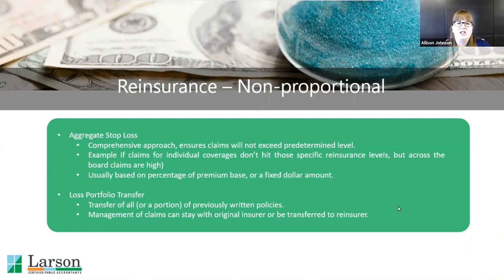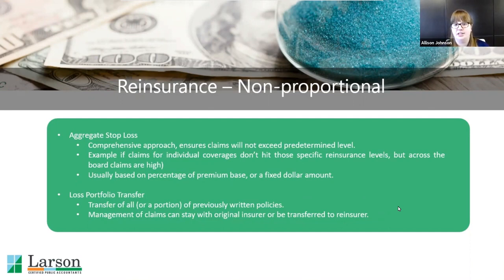A loss portfolio transfer is more of a one-time event rather than an ongoing reinsurance agreement. Say an insurance company decides they no longer want to insure auto in a specific state — they could do a loss portfolio transfer, taking that whole block of business and associated policies and transferring it to someone else. Depending on the agreement, they may still process those claims and get reimbursed, or they could transfer everything completely. These agreements are pretty unique for each instance.